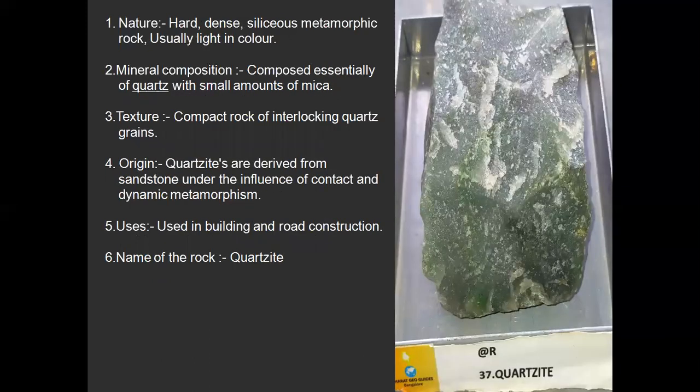Quartzite. It is a hard, dense, siliceous metamorphic rock, usually light in color. It is composed essentially of quartz — more than antiquity, it contains quartz. Texture is a compact rock of interlocking quartz grains. Quartzites are derived from sandstone; when sandstone undergoes metamorphism, quartzite is formed. Sandstone has silica (quartz) greater than 90%, and quartzite is similarly composed. Under the influence of contact and dynamic metamorphism. It is used in building and road construction.